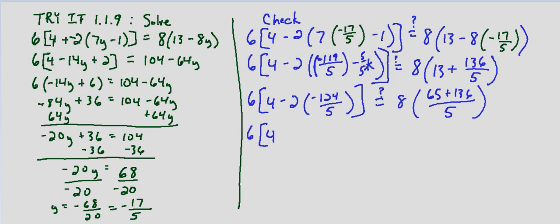So 6 times 4 minus, and we have a negative 2 times, and again we might want to just change this at this point to a plus negative 2. That way we don't forget to multiply by the negative. Negative times a negative is positive. And then negative 2 times negative 124 is 248 fifths. Does that equal 8 times 65 plus 136 is going to be 201 fifths.